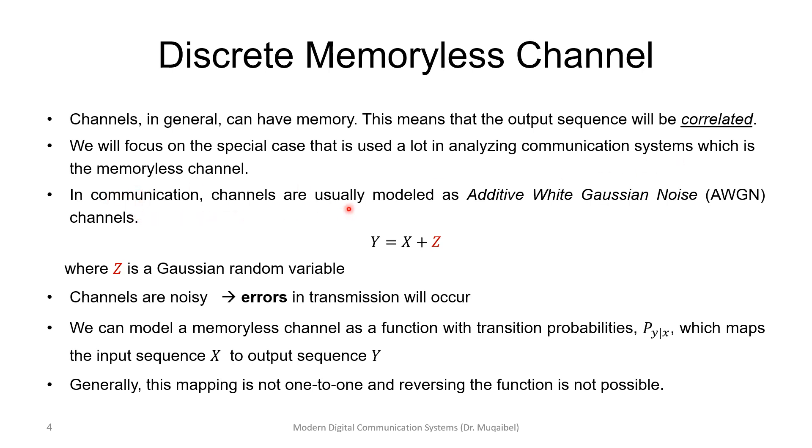Remember that in communication systems, the channel is modeled as additive Gaussian noise in many cases. So the output will be the discrete input, and we have a Gaussian random variable noise added.